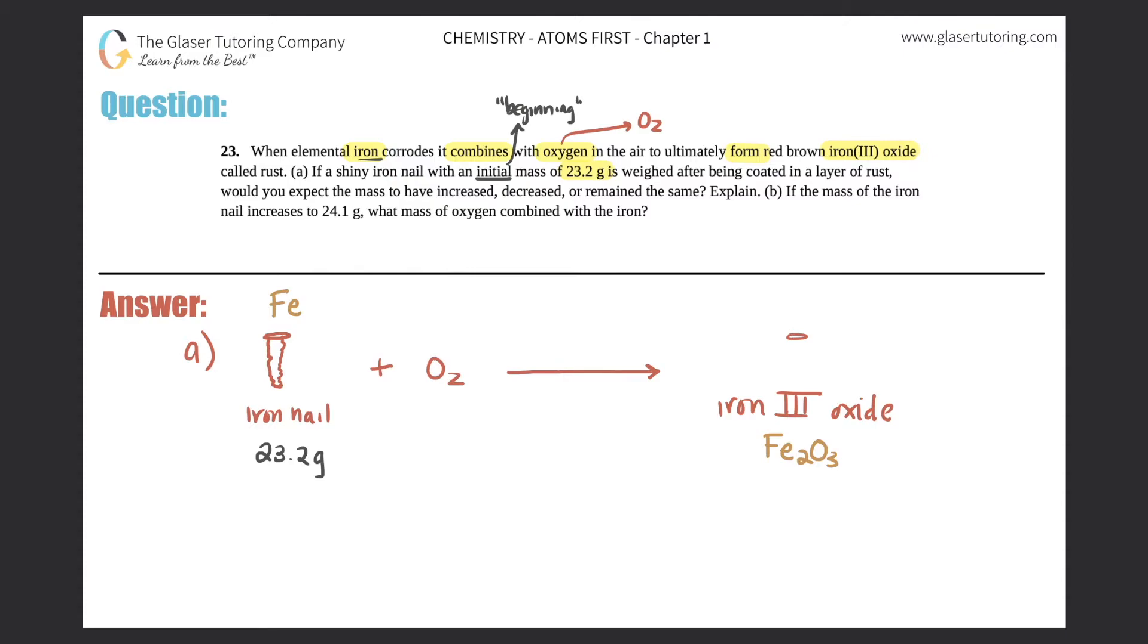So Fe plus O2 would give us that rusty nail. So here's my nail again, but now it's even more caked on. It's rusted. Here's my rust that's covering it because it reacted with the iron. So this is all rusty.